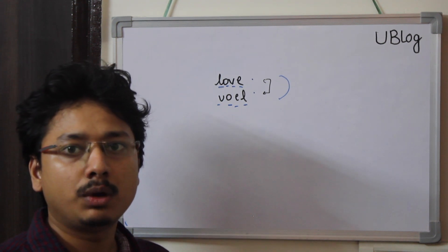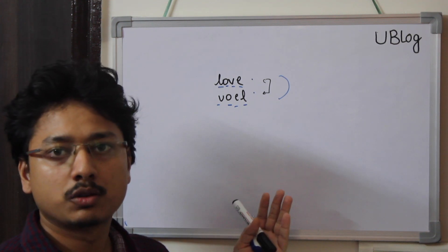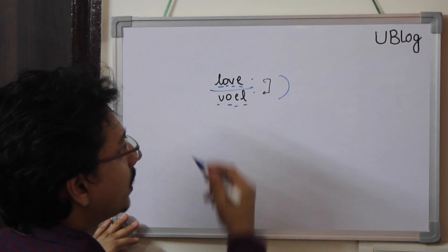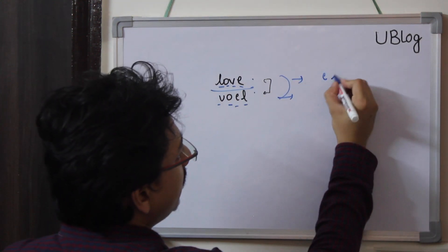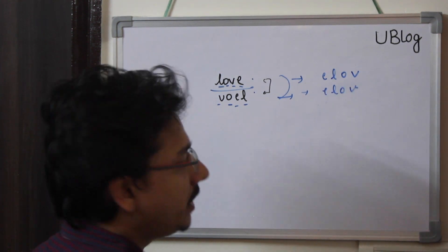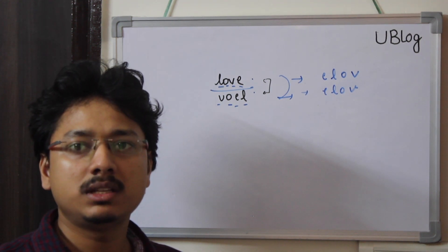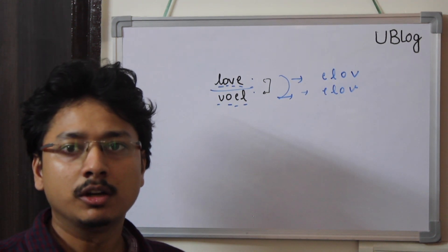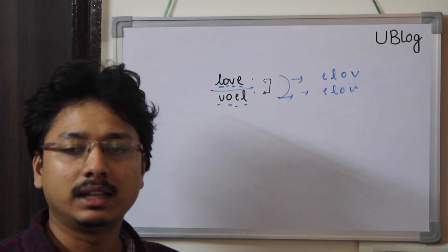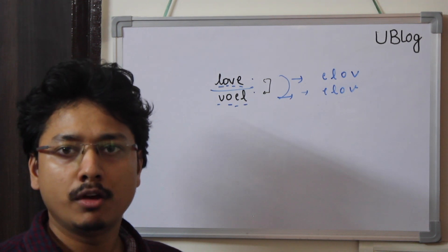In the naive solution, without using extra space, I can sort both strings. If I sort 'love' I get 'ELOV', and if I sort the other string I also get 'ELOV'. So I compare the sorted versions of both strings, and if they match, they are permutations of each other. This is the approach you should start with before optimizing.